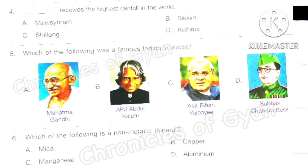Question 4: Which place receives the highest rainfall in the world? The correct answer is option A: Mawsynram, which is in Meghalaya.